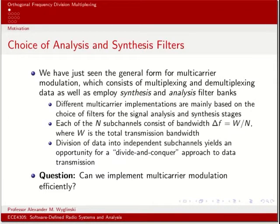In the previous lecture, we looked at a general form of multi-carrier modulation, where we have synthesis filter banks and analysis filter banks, commutators, demultiplexers and multiplexers, dividing up high-speed data transmissions into parallel sub-carriers that are filtered and summed together at different frequencies to create a composite multi-carrier signal communicated over the transmission medium. Although this can remedy issues like frequency selective fading, there are problems with computational efficiency and implementation complexity.